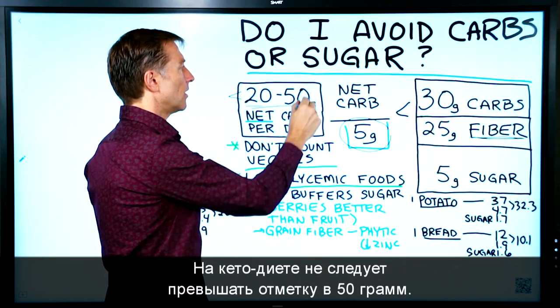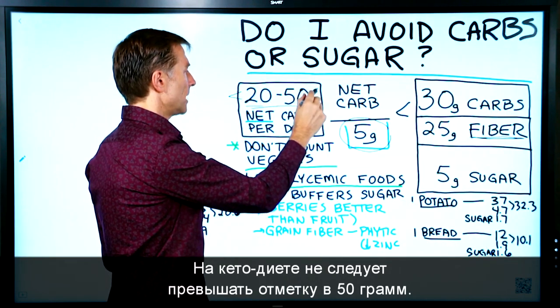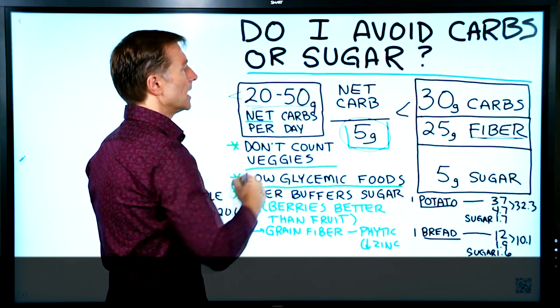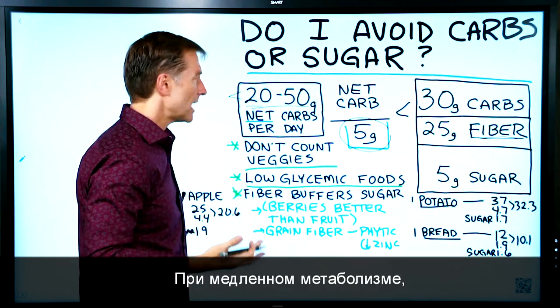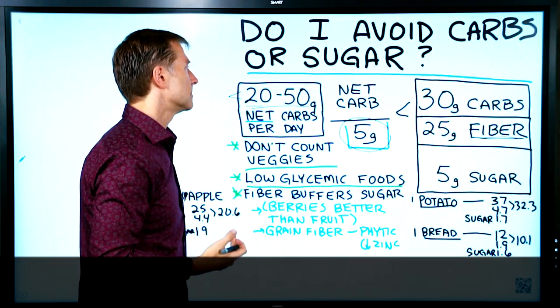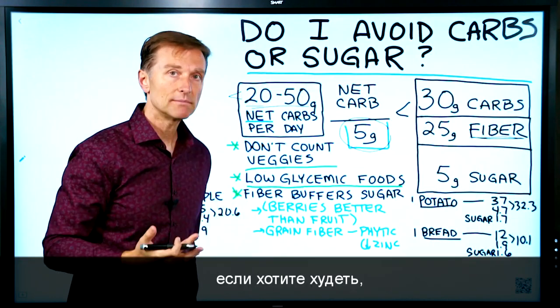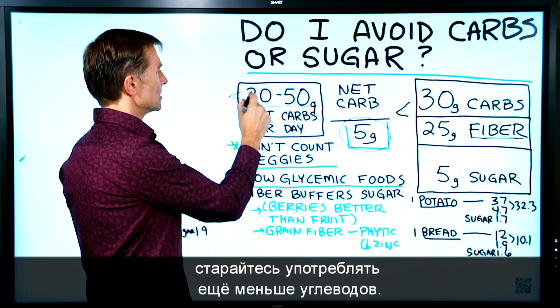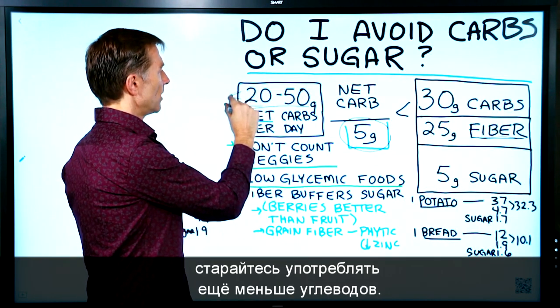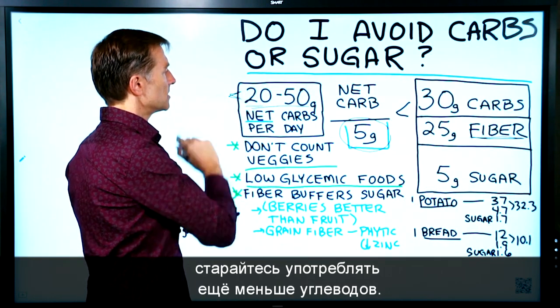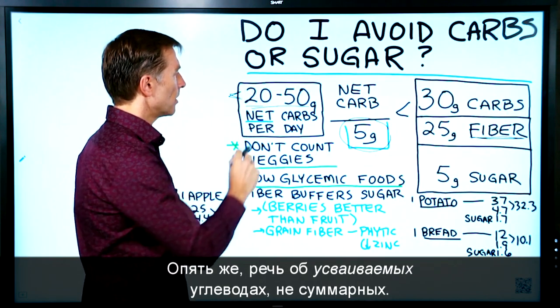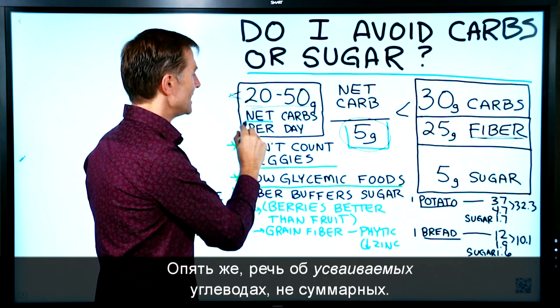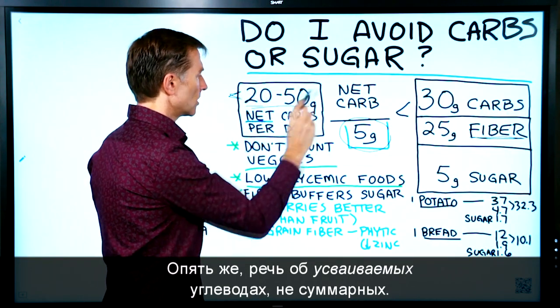With keto, you don't want to go above 50 grams. If you have a slow metabolism and you want to lose more weight, just go down further and cut the carbs even more. But we're operating off of net carbs, not total carbs.